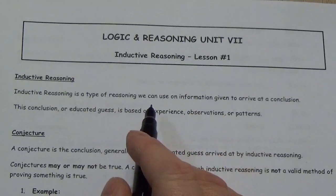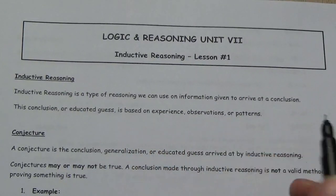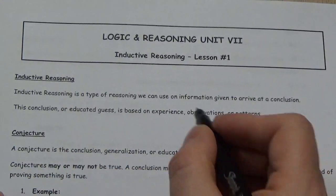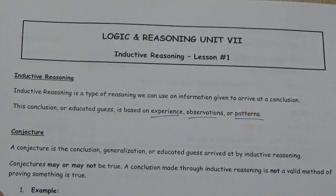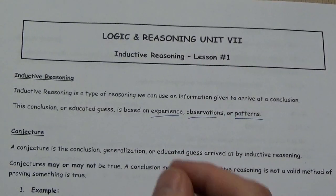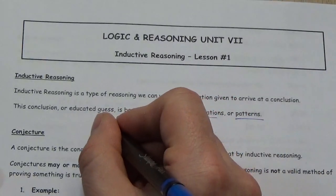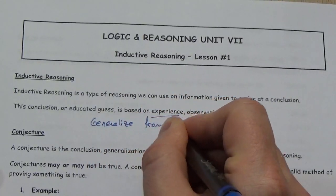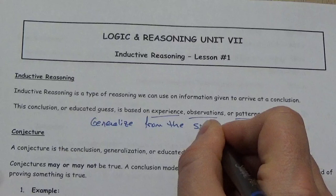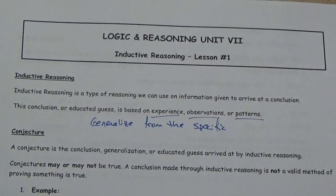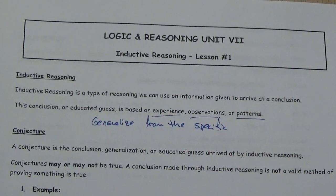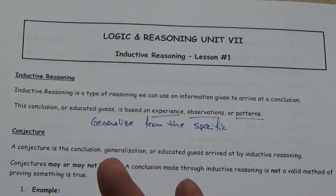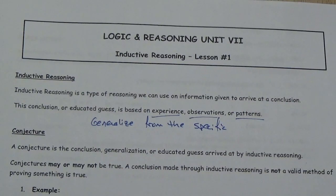Inductive reasoning is a type of reasoning we can use on information given to arrive at a conclusion. This conclusion or educated guess is based on experience, observations, or patterns. What we do here is we generalize from the specific. So you're looking at specific examples of something, and then you're going to make a guess that that particular pattern that you've witnessed is going to continue to hold.